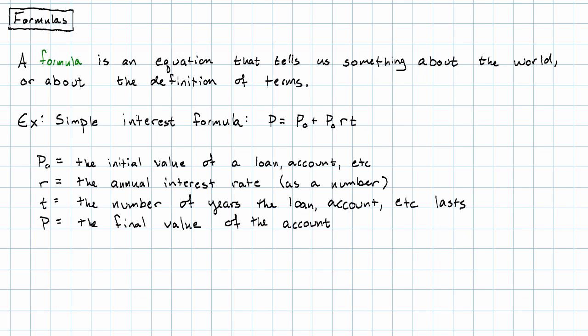In this equation, P with a subscript zero, we would read this as P sub zero or P0 or sometimes P not, not being another word for zero. So, P0 is the initial value of a loan or account or whatever you're paying interest on.